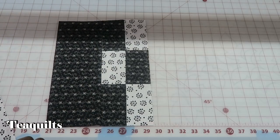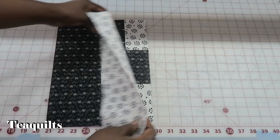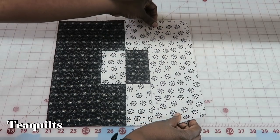Where you have the light in the center you want to put your dark fabric and where you have your dark fabric in the center you want to put your light.